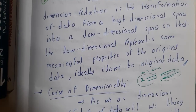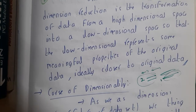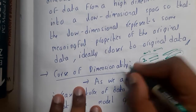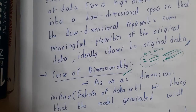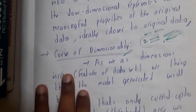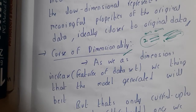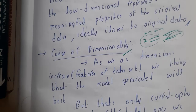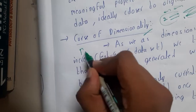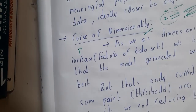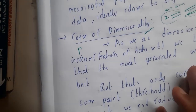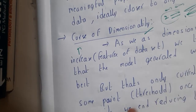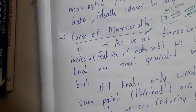There is a 'curse of dimensionality.' Whenever you are increasing or reducing dimensionality, there are both advantages and disadvantages. When you increase dimensionality, you are giving more clarity about the data, but if you increase it too much, you are actually decreasing the quality of the model — you are over-increasing the dimensions.